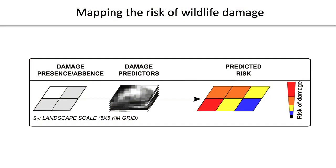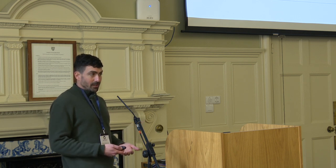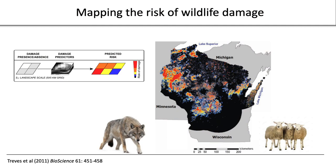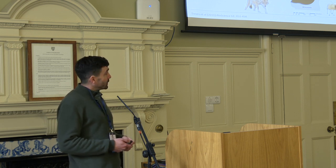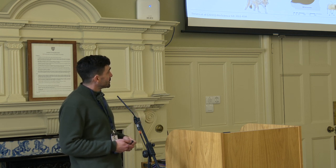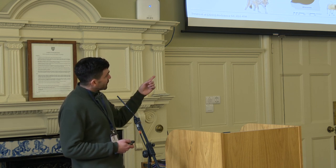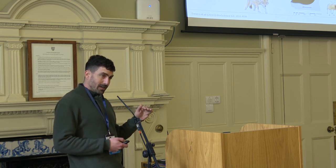Mapping the risk of wildlife damage will inform us which areas of the landscape are more vulnerable and where we can invest in prevention, which is very important because resources for conflict mitigation are very limited. This is an example from the United States with wolf predation on sheep. They use presence and absence data of predation locations and model it as a response of different predictors like forest cover. Based on the model coefficients, a risk prediction is projected across the landscape — the darker the red, the higher the risk.